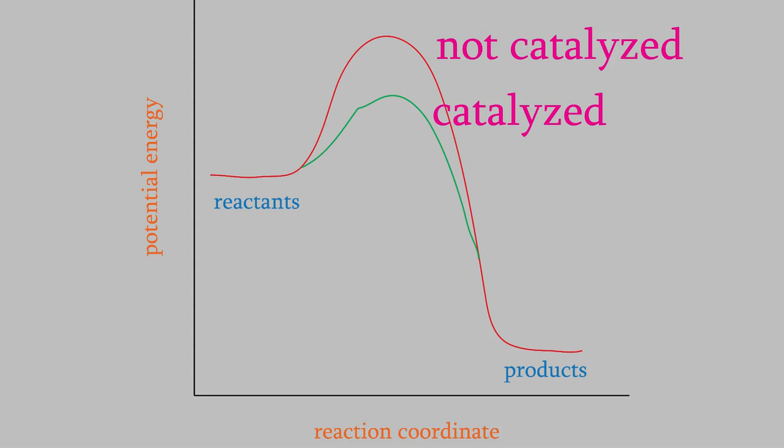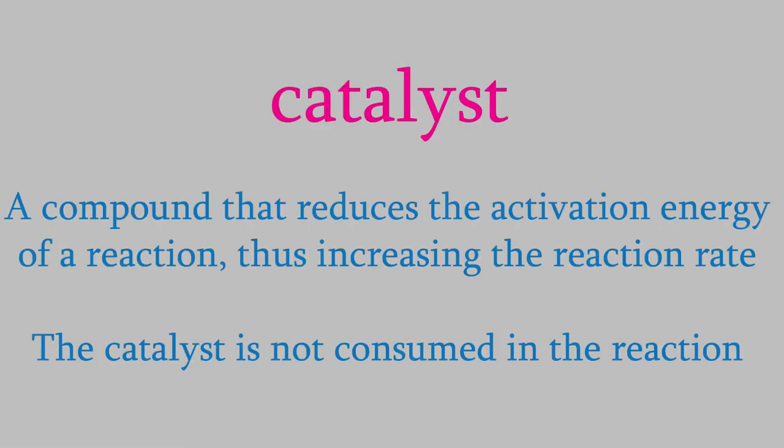An important feature of a catalyst is that they're not actually used up in the reaction, so they're still there after the reaction is over. Lots of chemical reactions that take place in living things have very high activation energies, like photosynthesis, so they'd be almost impossible without catalysts to help them along. In living things, many of the catalysts are a type of protein called an enzyme.